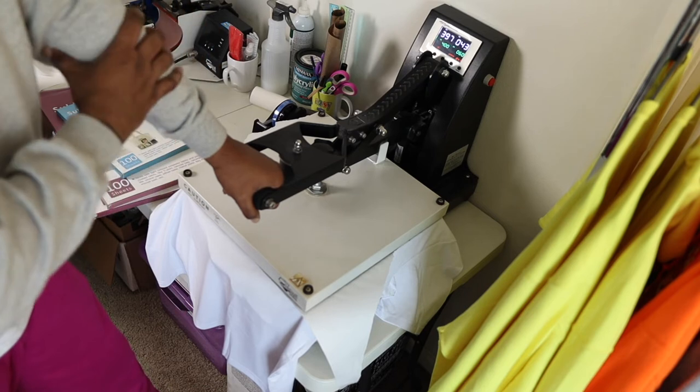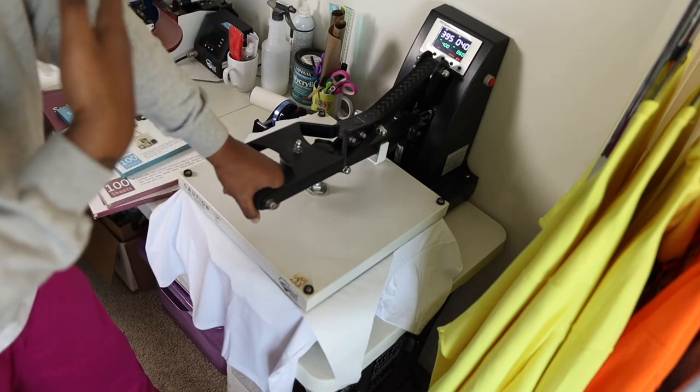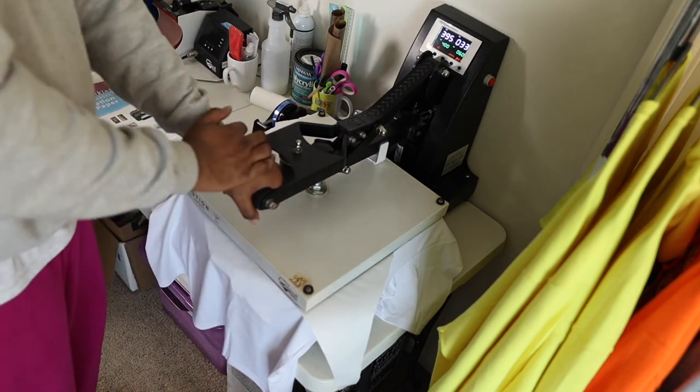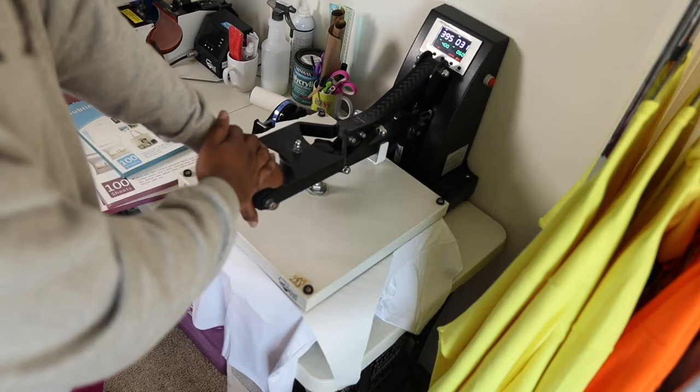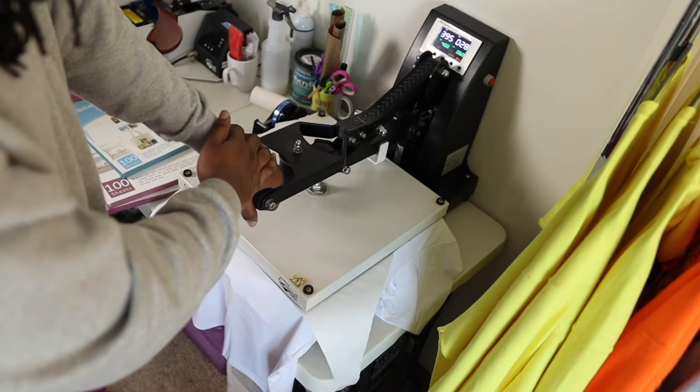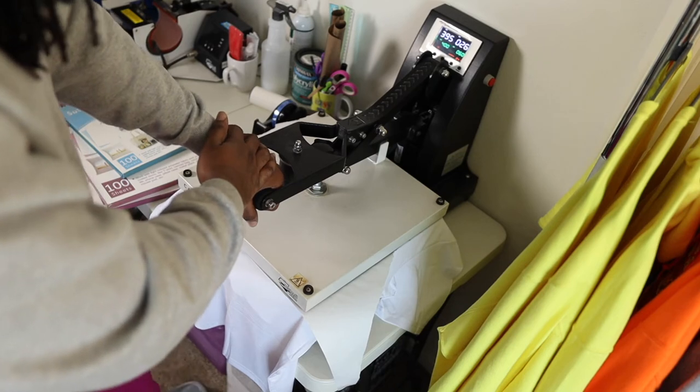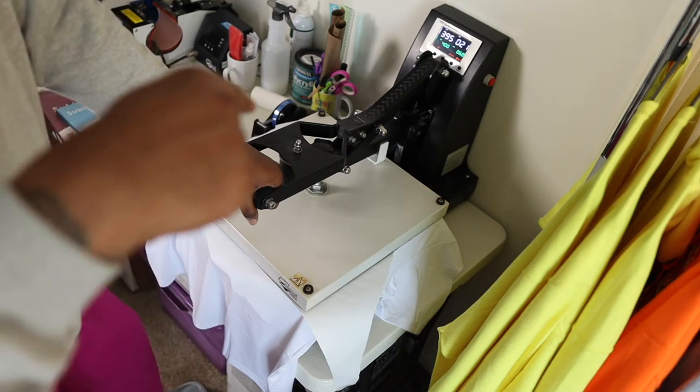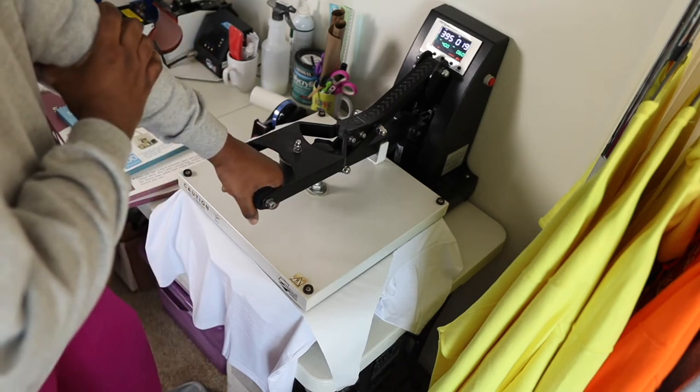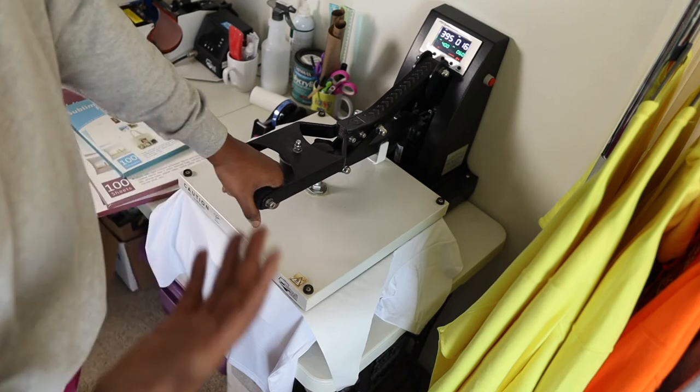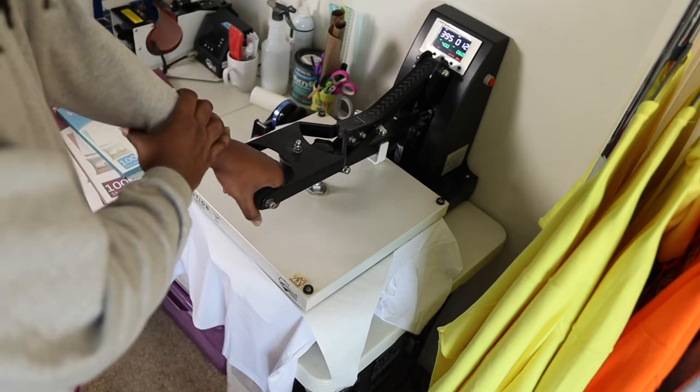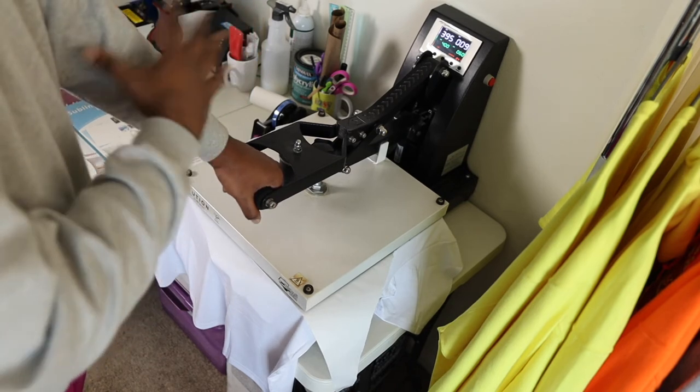Also stay tuned because I'll do another video and we'll use the exact specifications on this paper to see if there's a difference in that as well. Once again 60 seconds, 400 degrees. Printer's Jack is the paper. Links are in the description below as well as the discount code. Use that you get like 50% off your purchase, something like that, not bad. Also each pack rather comes with 100 sheets.